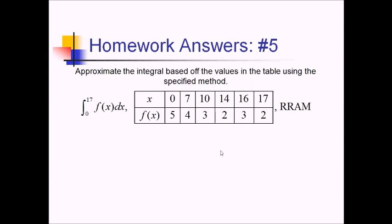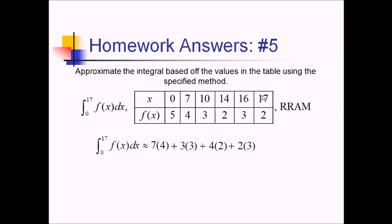On this problem, we want to approximate the integral from 0 to 17 of f of x using these selected values and RRAM. Since we're using RRAM, we're going to use the right endpoint of each rectangle. So we have a rectangle going from 0 to 7, that's a base of 7, and we're going to use the right y value, so that's 7 times 4. The integral from 0 to 17 is approximately equal to 7 times 4, plus base of 3 times the right side value of 3, plus base of 4 times 2, plus base of 2 times a height of 3, plus the base of 1 times a height of 2. Adding all this up: 28 plus 9 is 37, plus 8 is 45, plus 6 is 51, plus another 2 is 53.